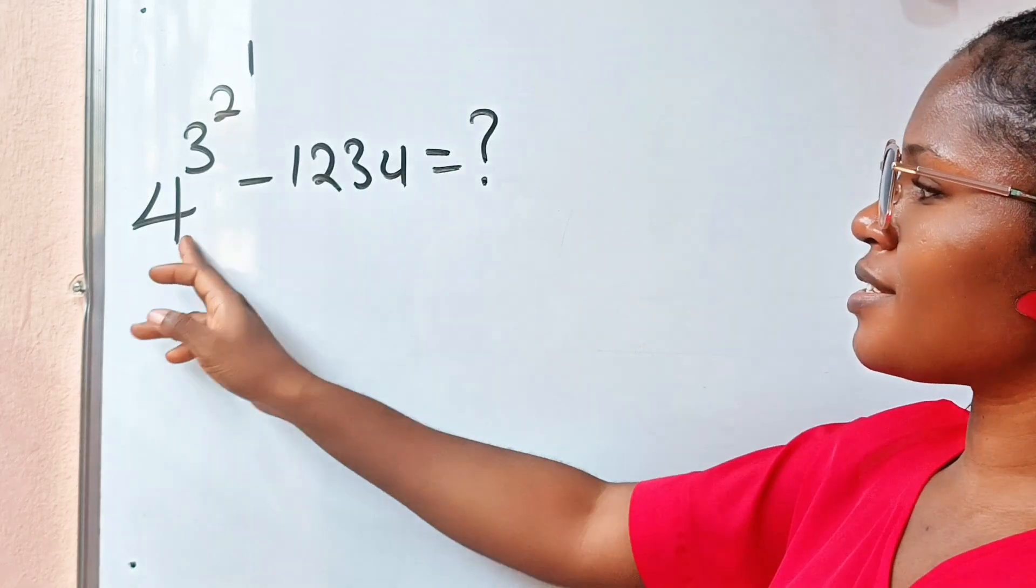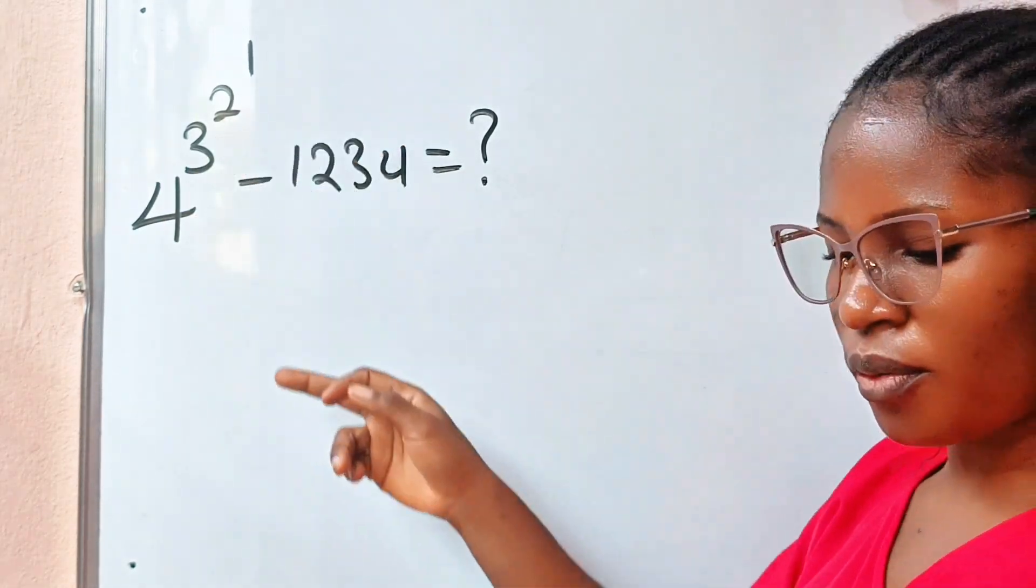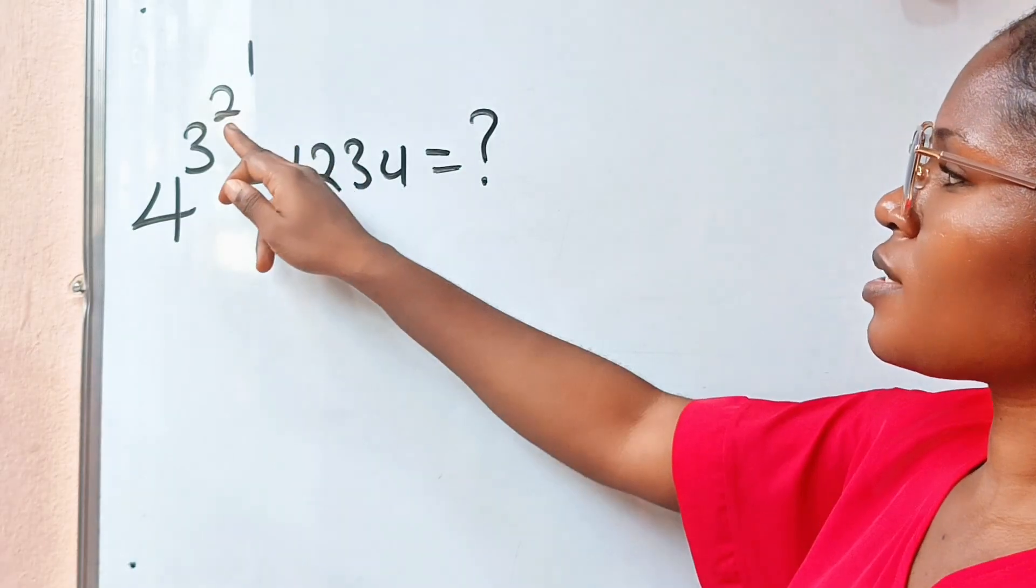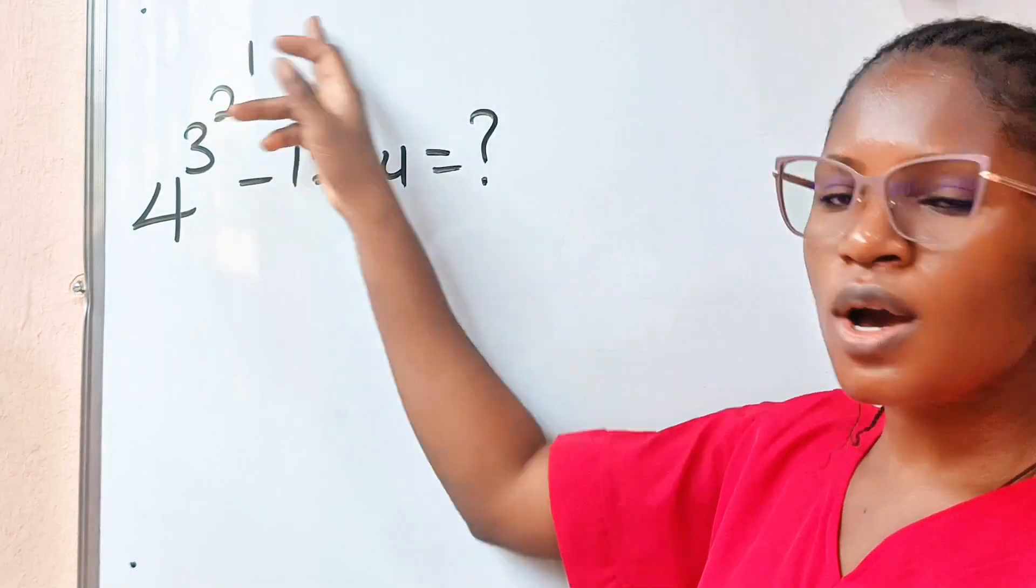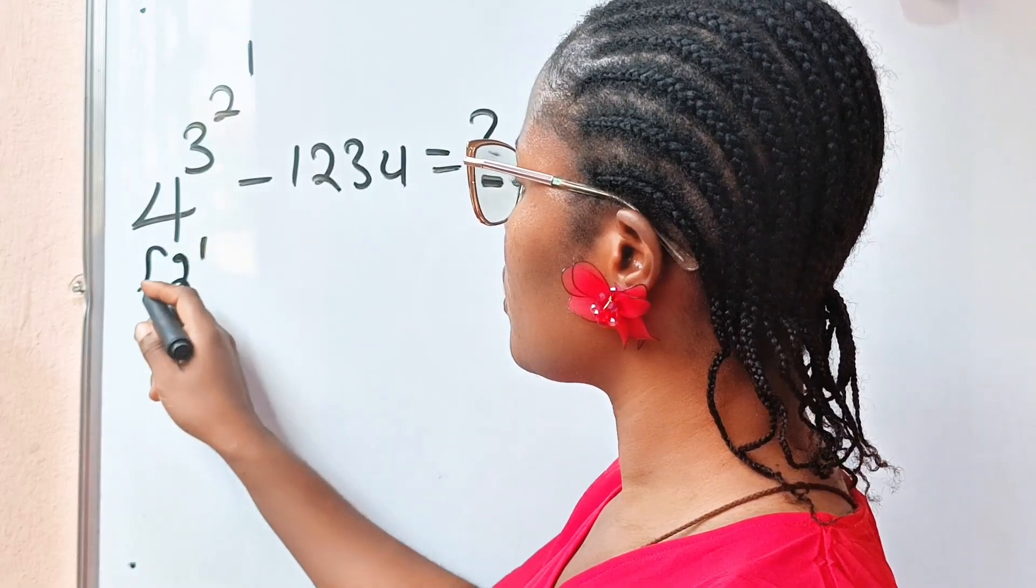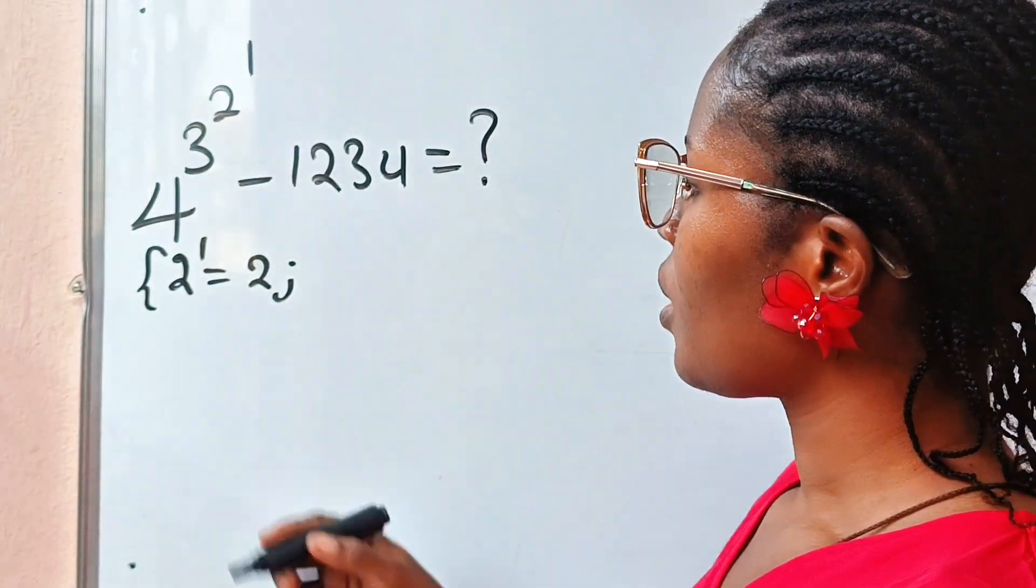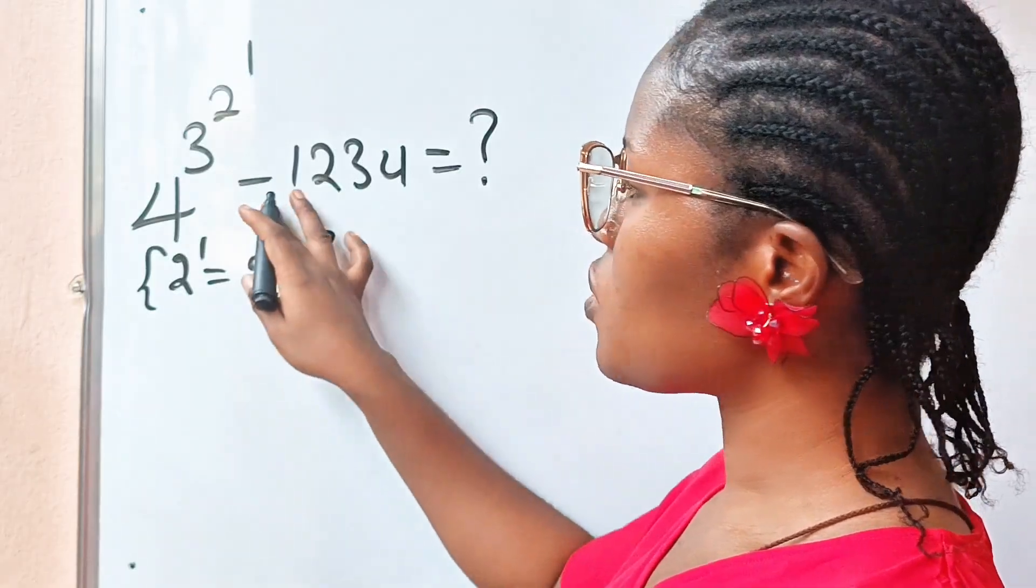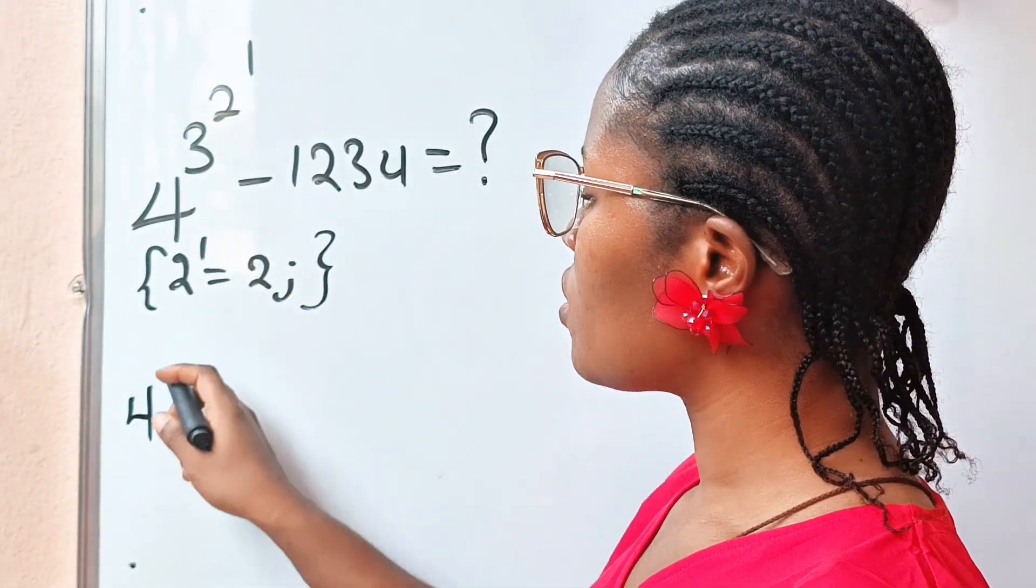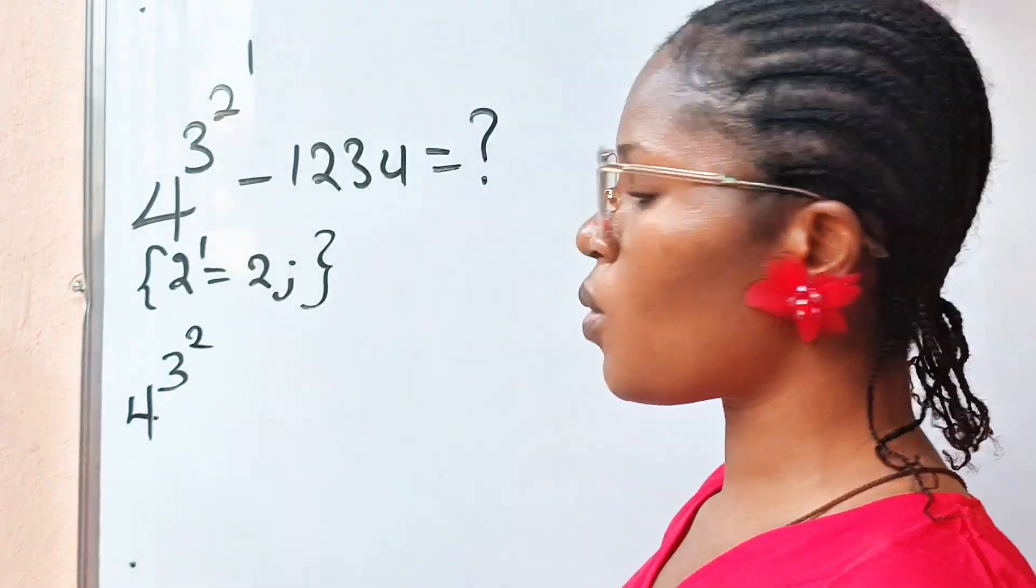Now, first, this is ladder or ladder power, right? Since this is a ladder form, we advise to start solving from the topmost. So, we are going to start with 2 to the power of 1 is still equal to 2. This is what we will have.